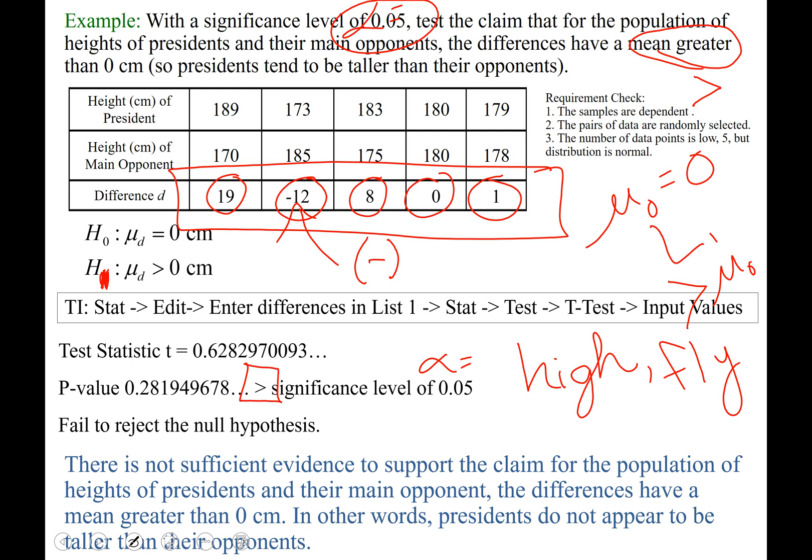So we will fail to reject the null hypothesis. And our conclusion would then be there is not, first blank to fill in, sufficient evidence to support, it's the second blank we had to fill in, based on the original claim not containing equality. The claim for the population of heights of presidents and their main opponents. The difference is having a mean greater than 0 centimeters.